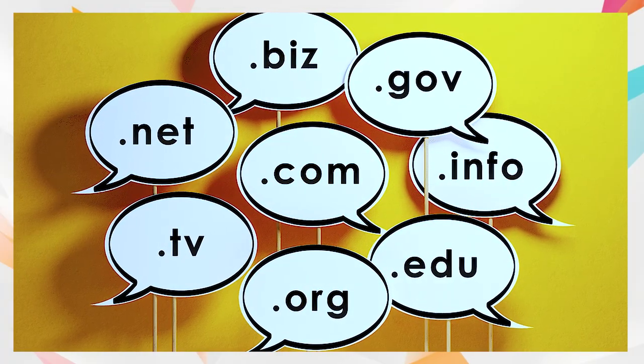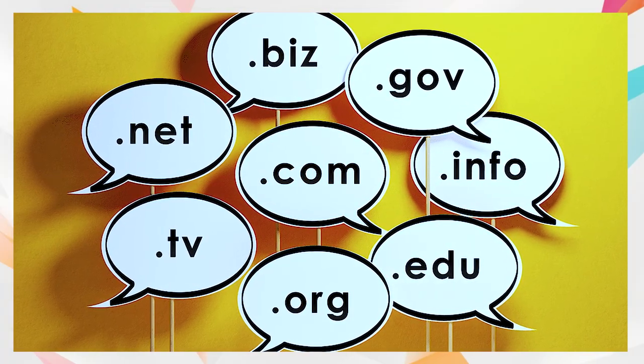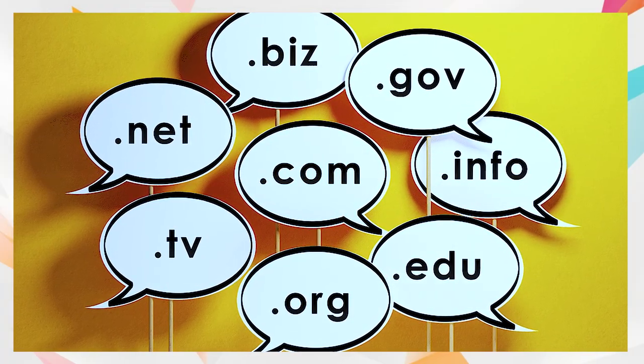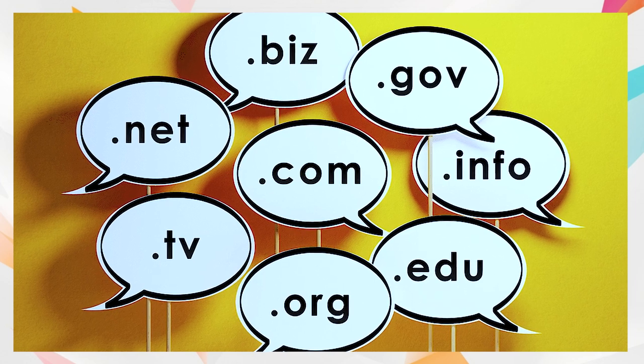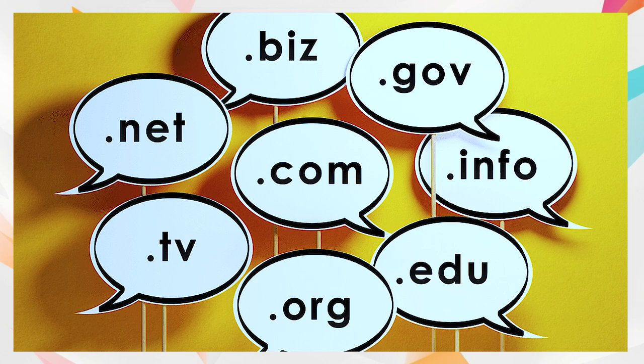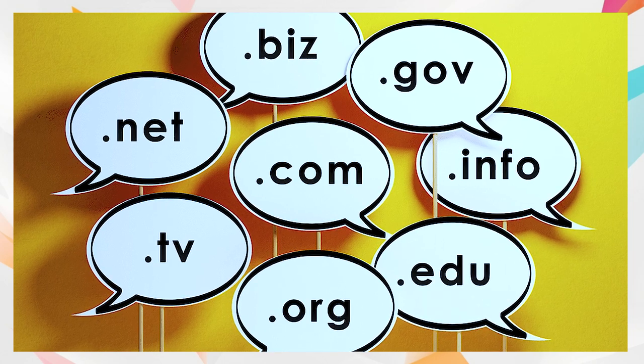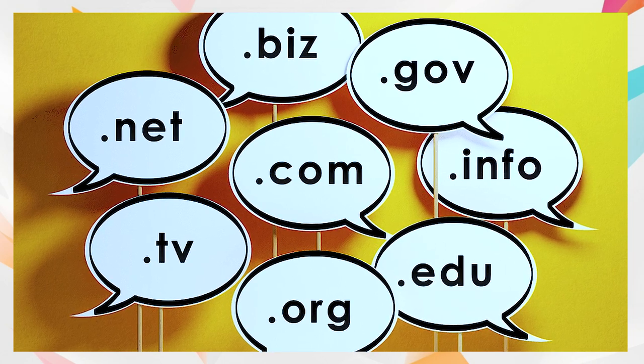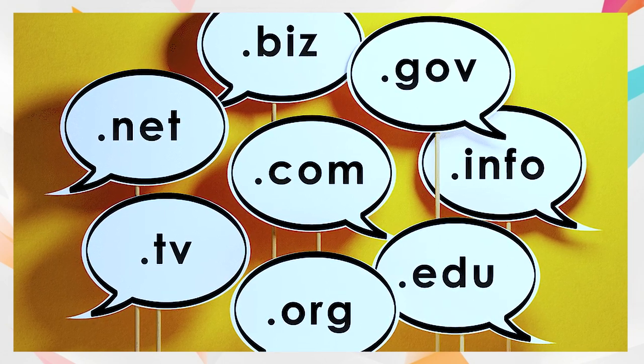The domain name has an extension which is either .com, .org, and we even have customized extensions for countries — like .so for Somalia, .ke for Kenya, .uk for United Kingdom, .ae for United Arab Emirates, and many other countries have different extensions. So a domain name is compulsory for you to have a website.